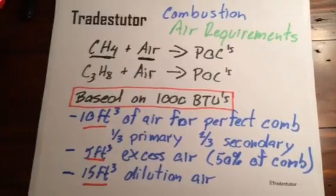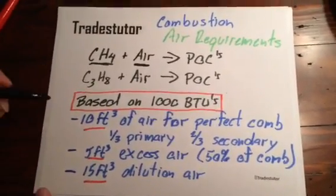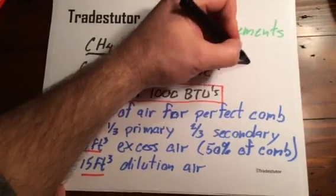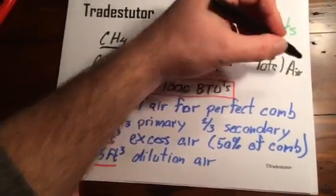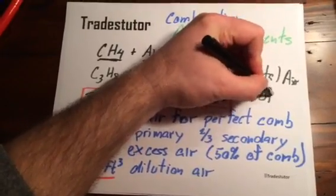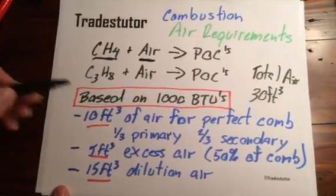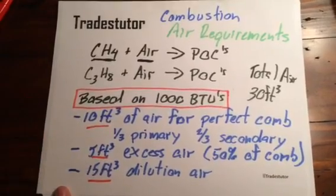Now, sometimes what you'll see as well is at the end of the day, they'll add them up, they'll call it total air, and total air is 30 cubic feet per 1,000 BTUs. And that's simply the addition of the 10, the 5, and the 15.